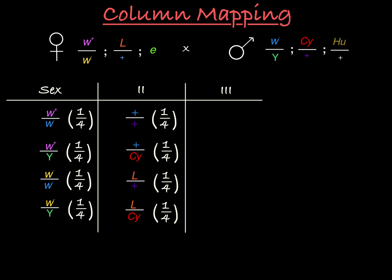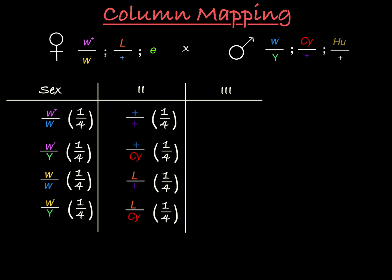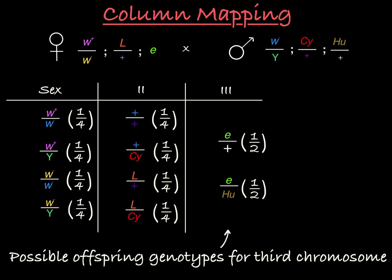For the third chromosome, we'll do the same thing. We see in our drawing that the female's two third chromosomes are identical, so she really only has one option to donate to her eggs — a chromosome carrying the mutant ebony allele. So she can pair this mutant ebony allele with either the male wild type chromosome or the male mutant humeral chromosome. Because the female is homozygous, there are only two possible offspring third chromosome genotypes in this cross, and they each show up one half of the time.